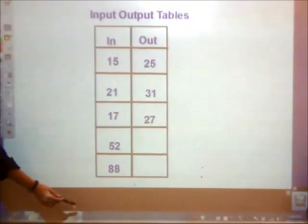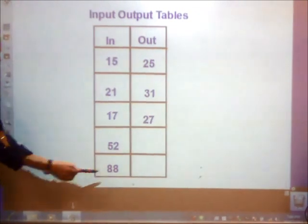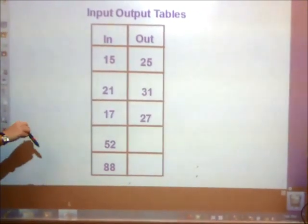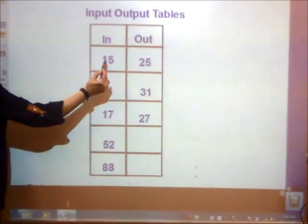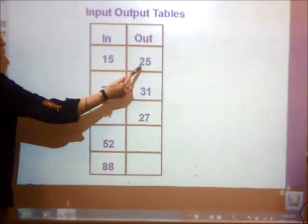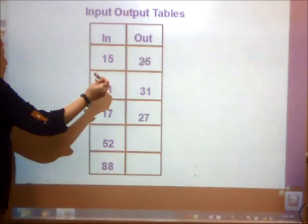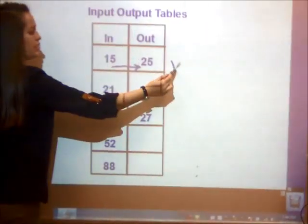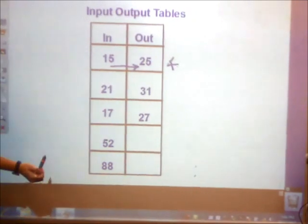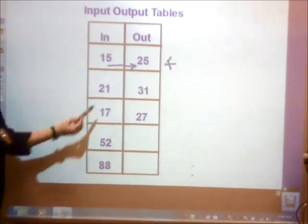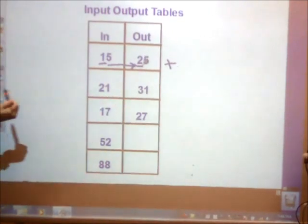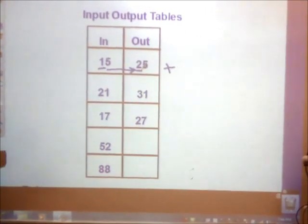Some input-output tables can go from top to bottom. Just because it's top to bottom doesn't mean I'm doing anything different. I'm still putting in 15 and I'm getting out 25. I know that from 15 to 25, my number is getting bigger. If you look closely, I can see that my tens place is changing.